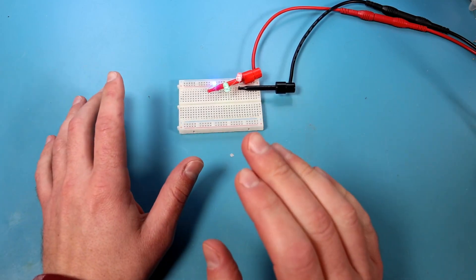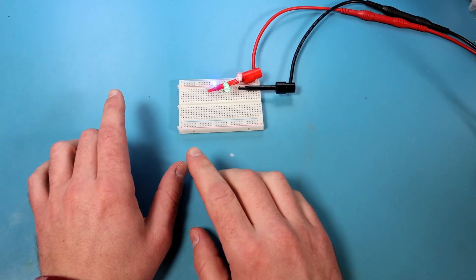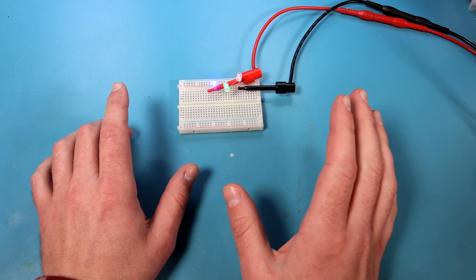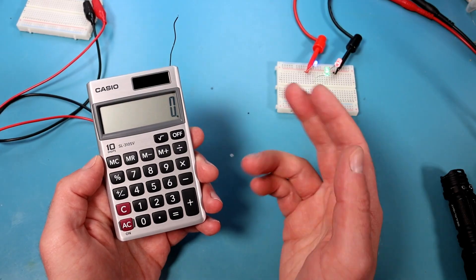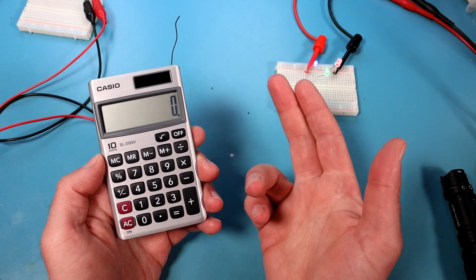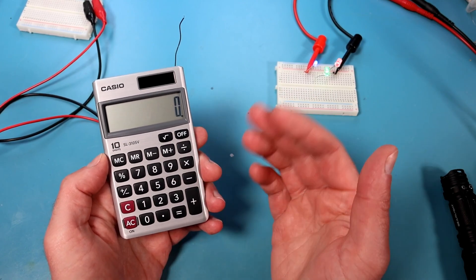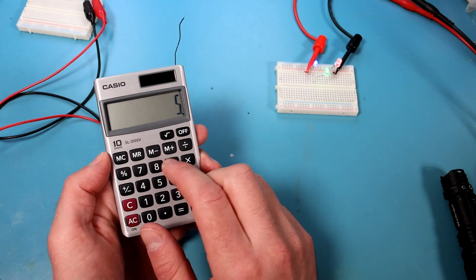LEDs are everywhere, standing at the ready to convert electricity into light. You probably have a bunch of them within reach, maybe discrete components like these, or light in the room you're in. You're certainly also aware of solar cells, which do the opposite, converting light into electricity, maybe on the roof of your house, or maybe in a cheap desktop calculator like this one.